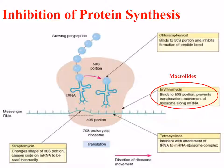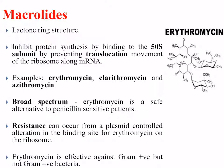The second family is the macrolides, of which erythromycin is a major member. This also binds to the 50S portion, but rather than preventing the formation of peptide bonds, it prevents the translocation movement of the ribosome along the messenger RNA. When we discussed translation, the ribosome needs to move along the mRNA molecule to read each separate codon. Macrolides work by inhibiting this movement and stopping translocation, so the ribosome can no longer make protein. The macrolides have a unique lactone ring structure, visible in the erythromycin molecule shown in the diagram.